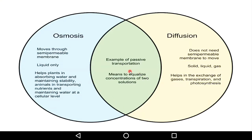There is a common example of passive transportation, which means to equalize the concentration of two solutions — the outer environment and inner environment — so that the concentration of nutrients is equalized. The difference between osmosis and diffusion is that diffusion applies to solid, liquid, and gas materials, while osmosis involves liquid across a semi-permeable membrane.